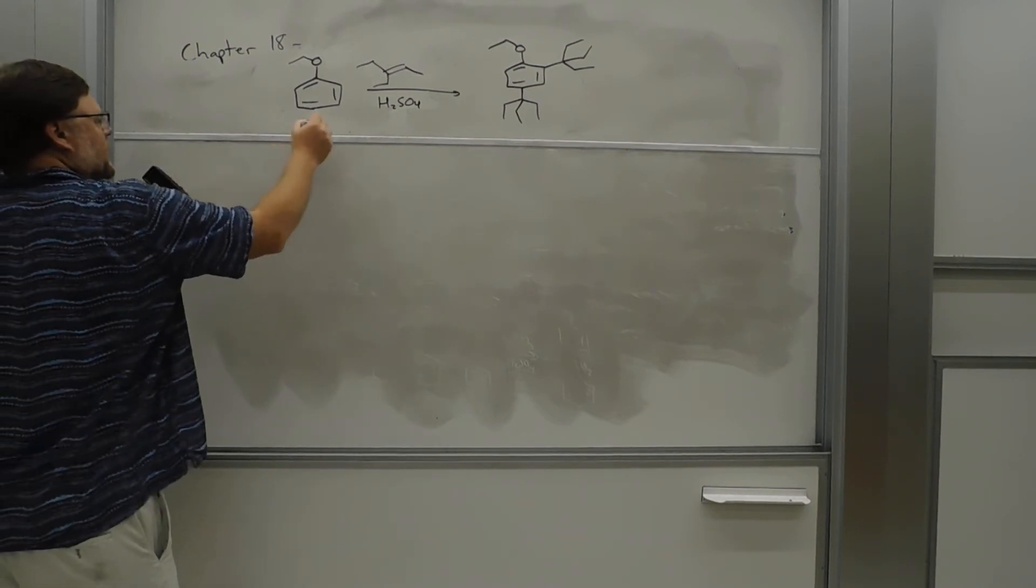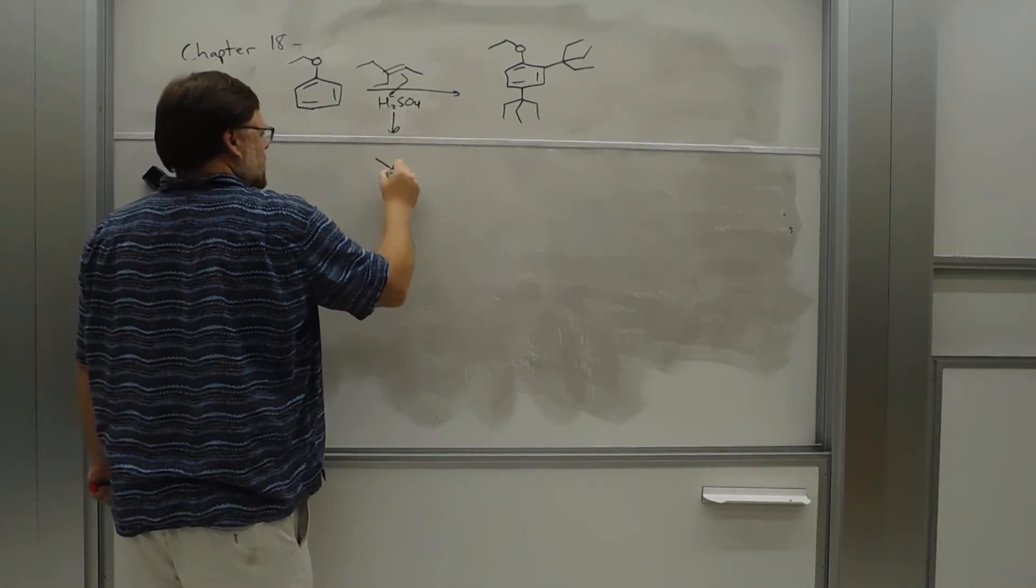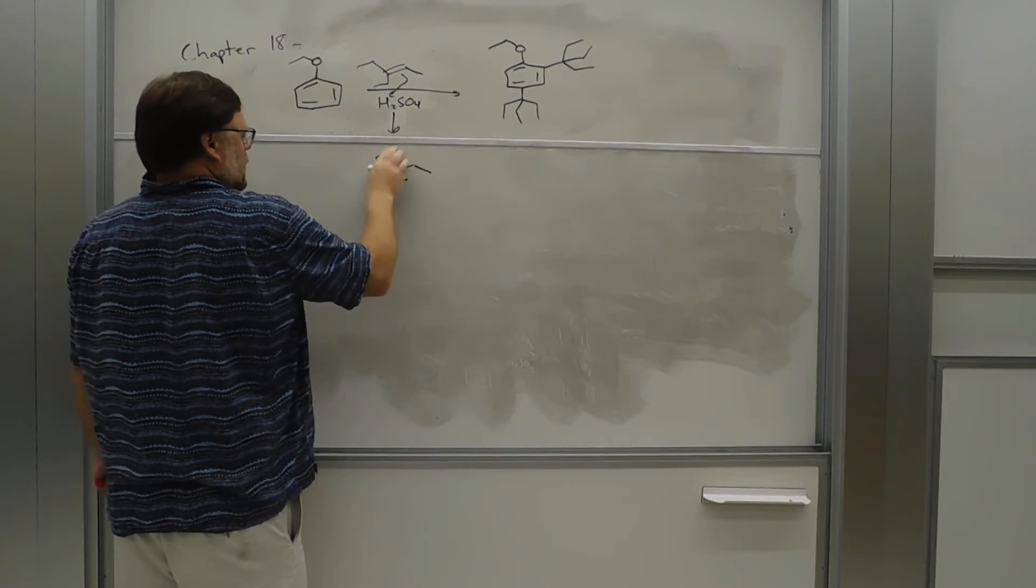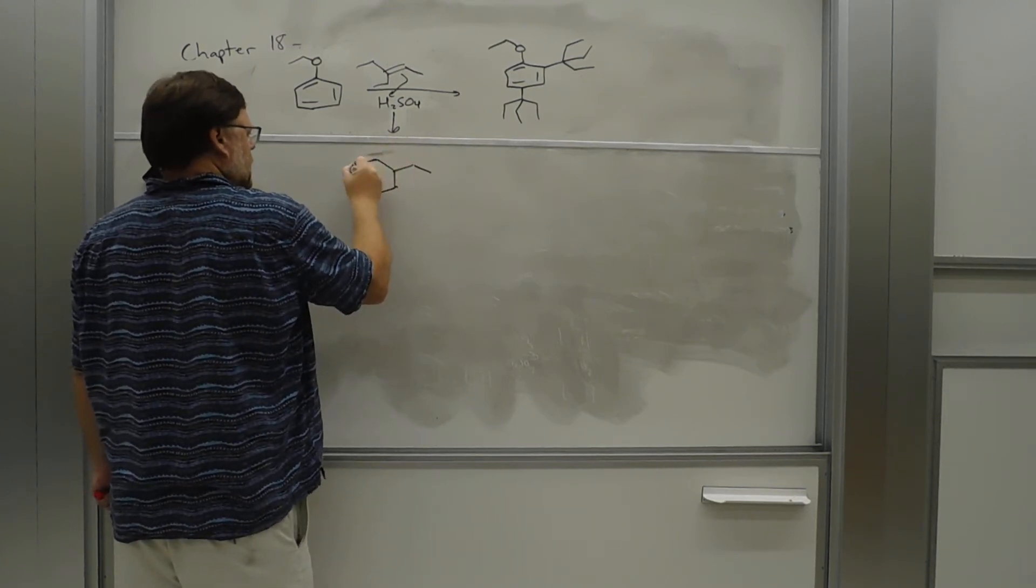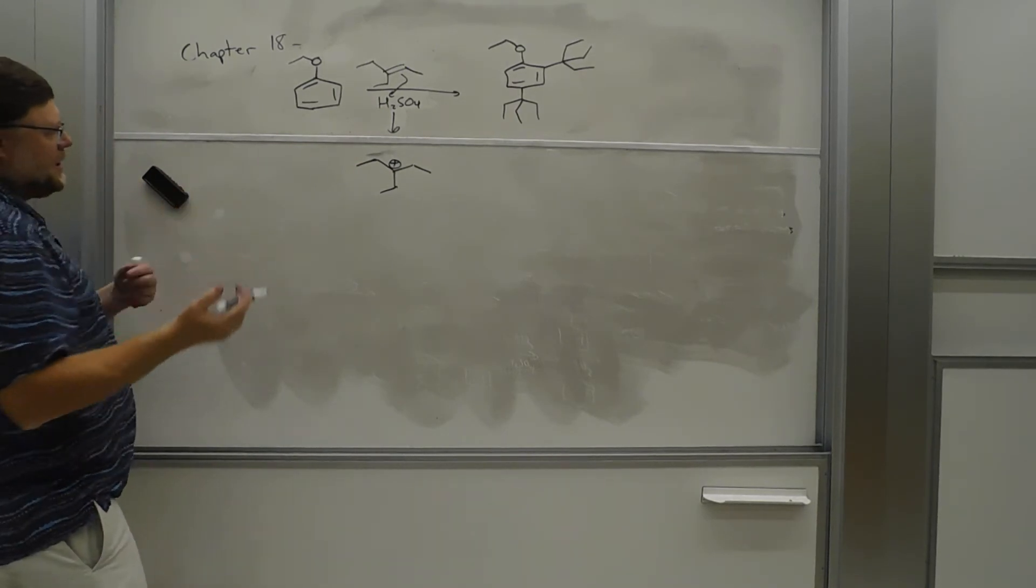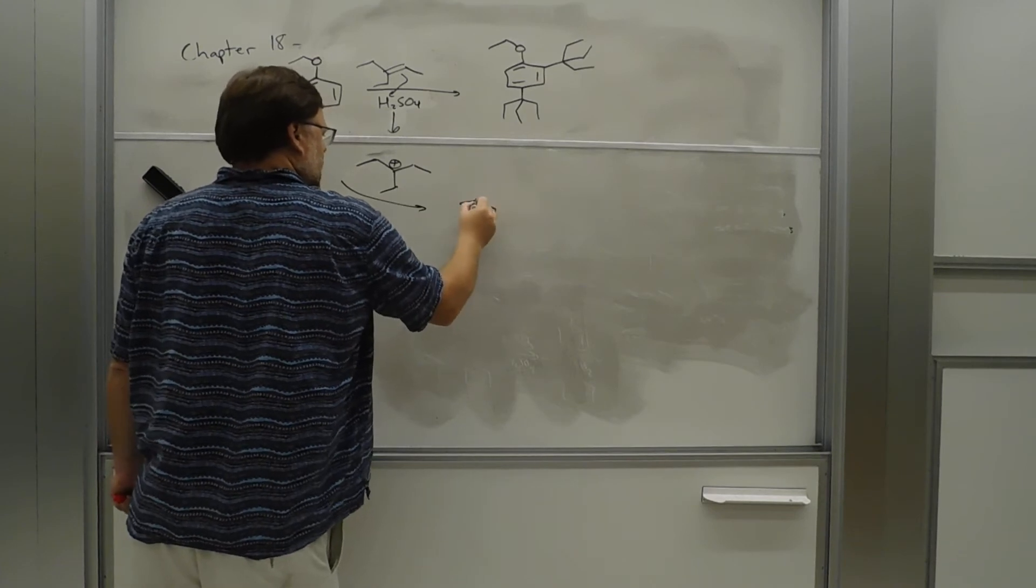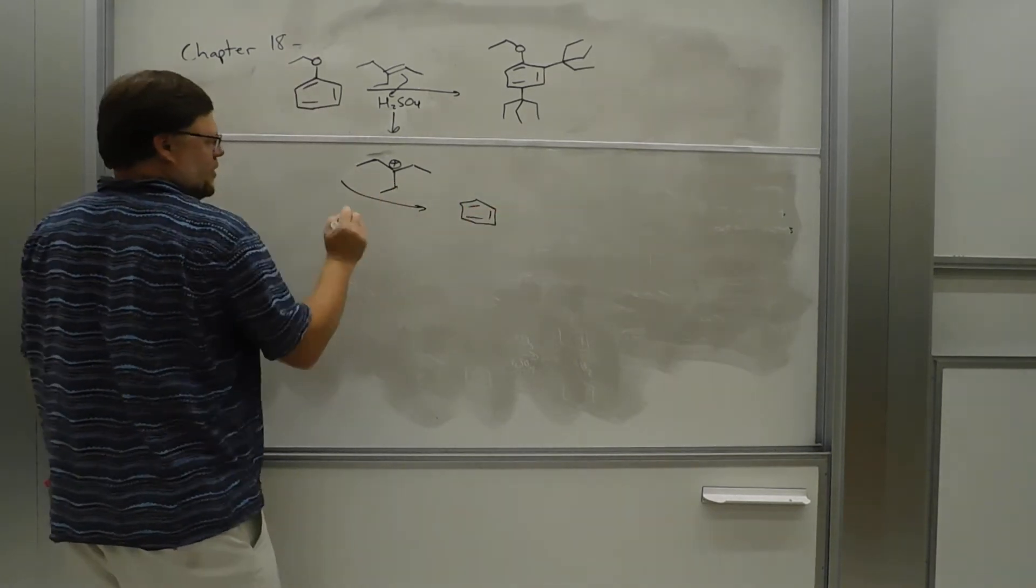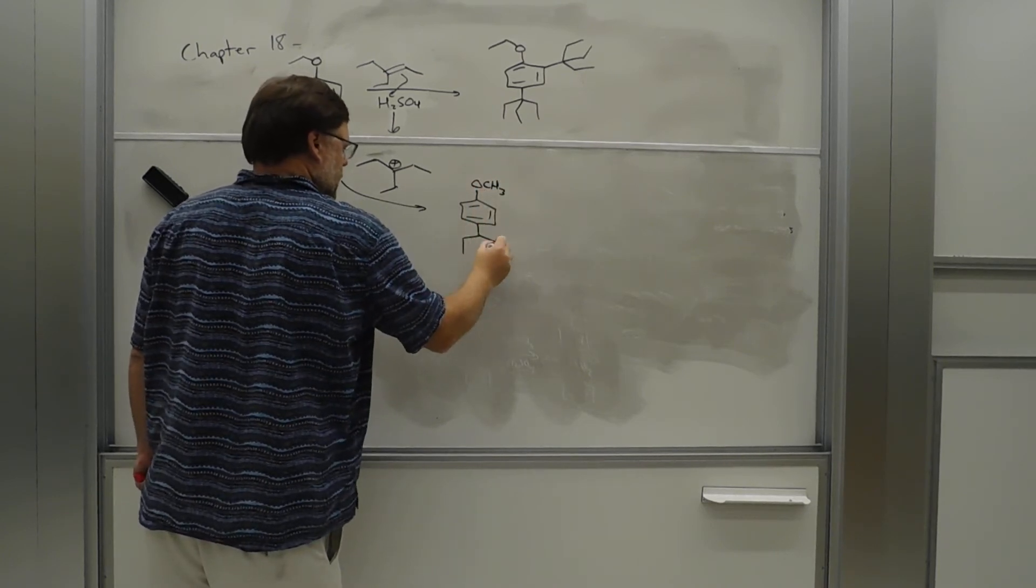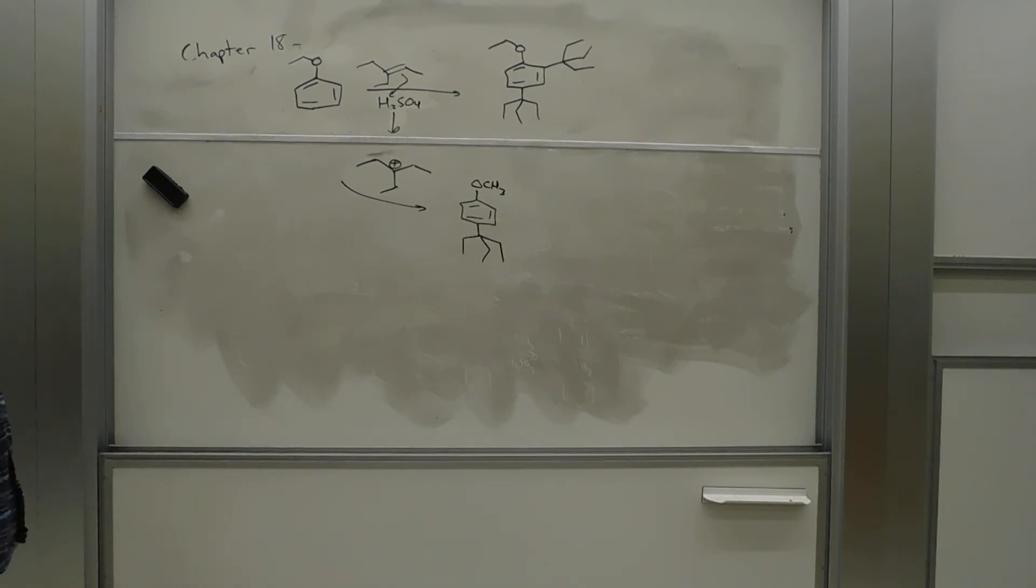So, first time, right, this is going to be a Friedel-Crafts alkylation. We're going to get this tertiary carbocation. Benzene is going to attack it. We're going to end up, given the sterics, given how large this group is, we're probably going to end up with the para position.